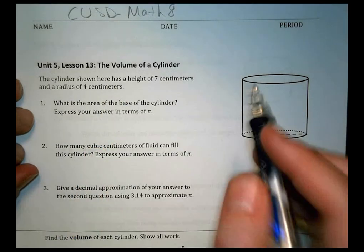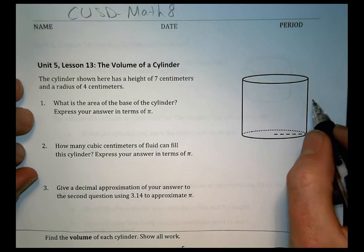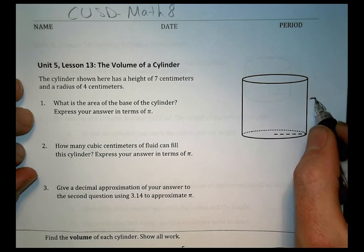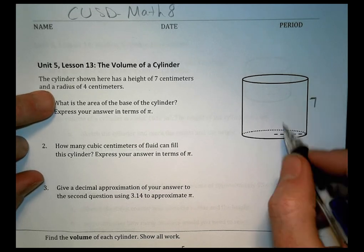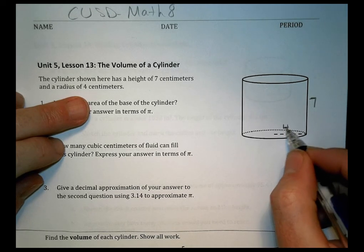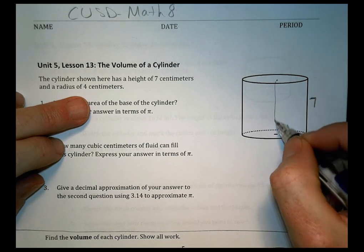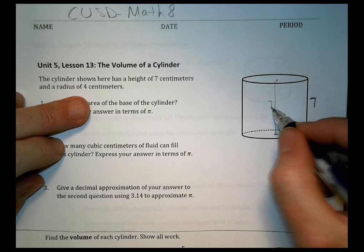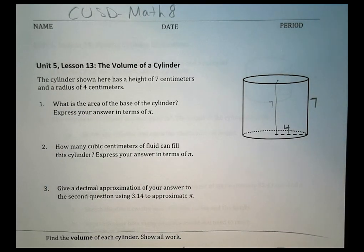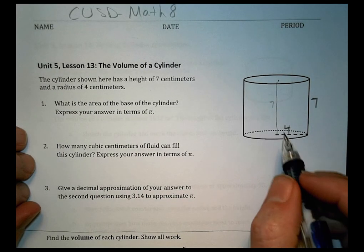It says here, the cylinder shown here has a height of 7 centimeters, so we could write that here on the side and say that's 7, has a radius of 4 centimeters, so a radius would be here. You could draw a height here if you chose to, the height can go down in the middle, it really doesn't matter too much, so it's up to you how your teacher showed you today.